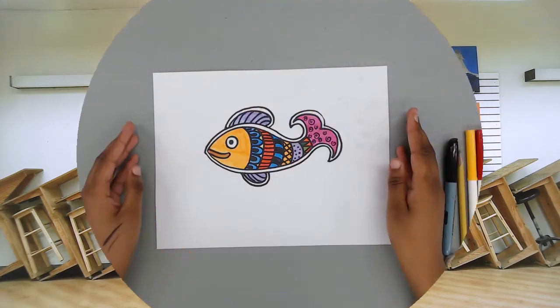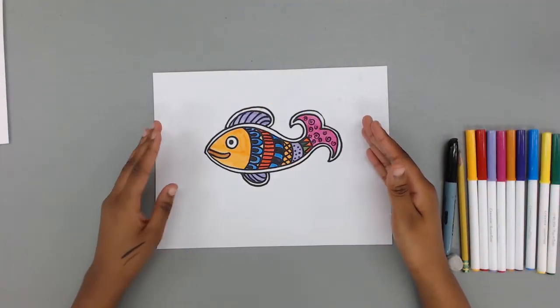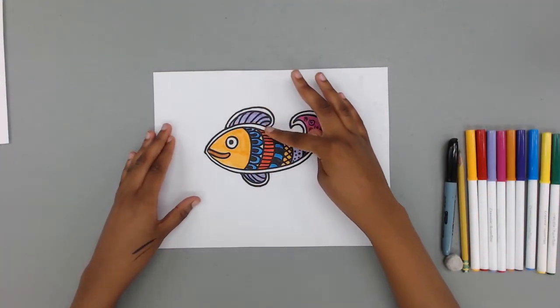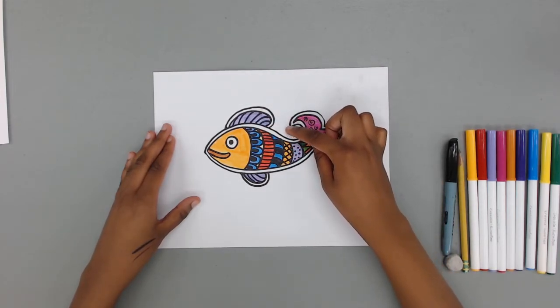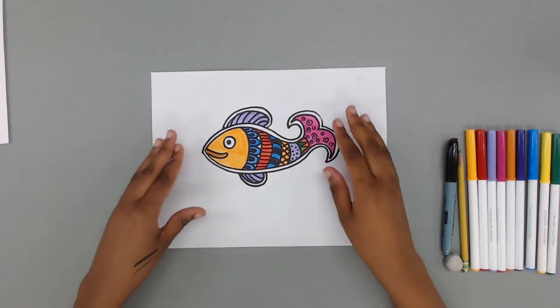Now we'll get started. If you look at the fish I have here, there's lots of curved lines. Some are long and some are short and some represent the letter C. Think of that when you're drawing your fish.